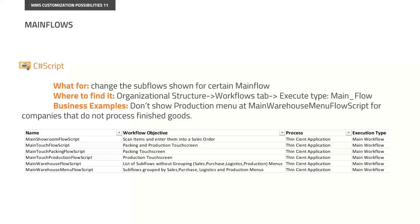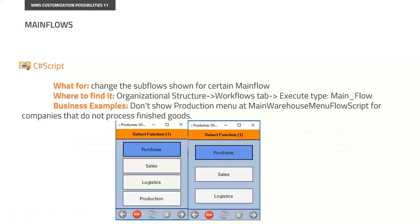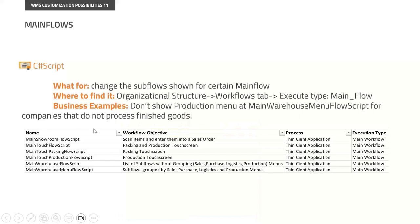What is a main flow? Because some of you may not have a clear understanding of the difference between these three concepts. A main flow is just alternatives to execute some business actions on the scanners — in clear words, the options that we have, the buttons that we have on the screen. For example, these are all the main flows possible in WMS, and when we select the main touch flow script, we'll only see packing and production possibilities on the scanner.